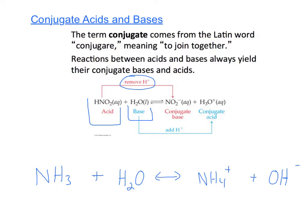So acids turn into conjugate bases. On the other side of the reaction, the base here that we started with, H2O, is going to gain a proton and become your conjugate acid, H3O plus.